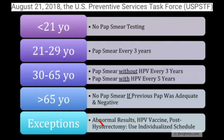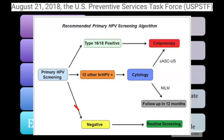Exceptions include: abnormal results, patients who received HPV vaccine, and post-hysterectomy — use an individualized schedule. For primary HPV screening algorithm: when HPV types 16 and 18 are positive, immediately refer for colposcopy. When other 12 high-risk HPV types are found, check cytology — if no intraepithelial lesion or malignancy, follow up in 12 months. If more than ASC-US (ASC-US, LSIL, HSIL), refer for colposcopy. When primary HPV screening is negative, go for routine screening.